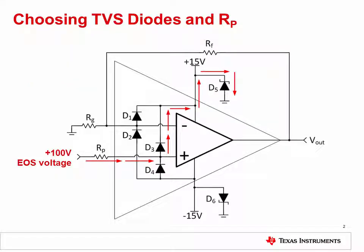In this video, we'll show how to select components for EOS protection. We will use the op amp datasheet absolute maximum specifications and application circuit operating conditions to select the appropriate TVS diode and current limiting resistors. The objective in selecting the TVS diode is to make sure that the diode is off and has minimal leakage during normal operation, but turns on and limits the supply voltage under overstress conditions. The objective in selecting the resistor is to limit the input current to less than 10 milliamps.